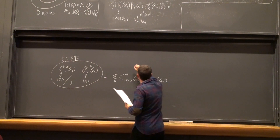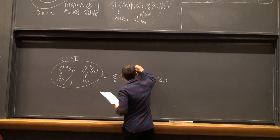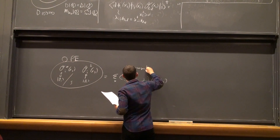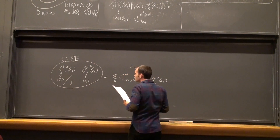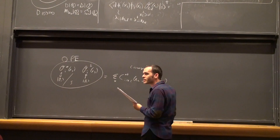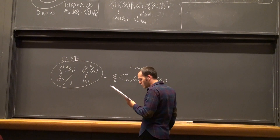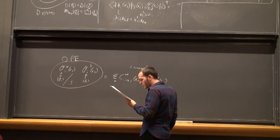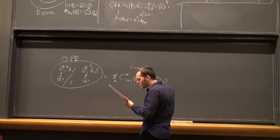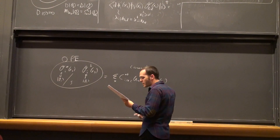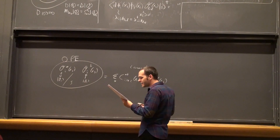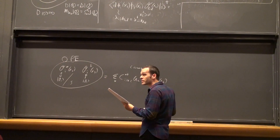I wouldn't call this product of states. I would just say that you insert these two operators, you trace a state on the sphere, and then you can expand that state on the basis — which is the basis of the corresponding local operators at x2. But I just wanted to use this mathematical fact. Basically, I was trying to say that any state in the Hilbert space can be written as a convergent sum of other states in the Hilbert space.